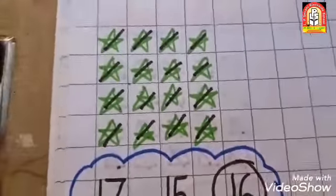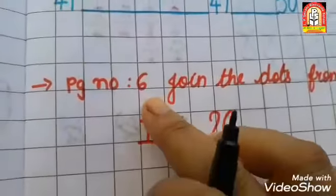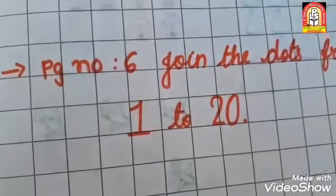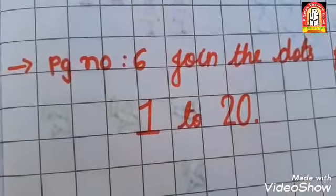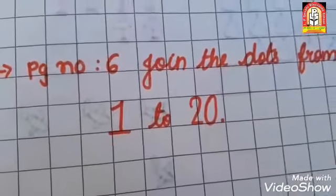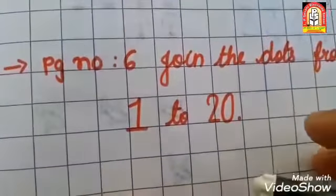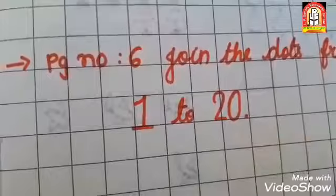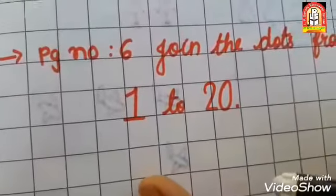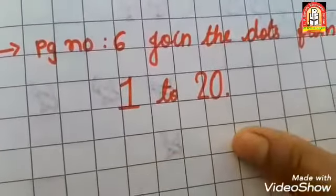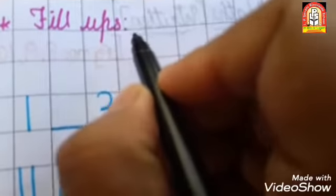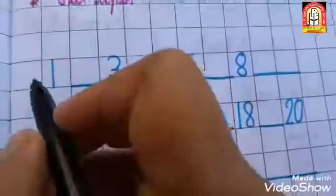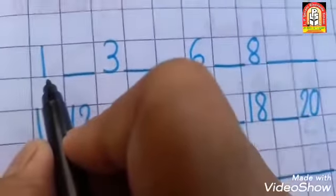Now, in your notebook page number 6, join the dots from 1 to 20. The dots are for filling in numbers. So, one is mentioned here. What comes after one? Very good — write number two.